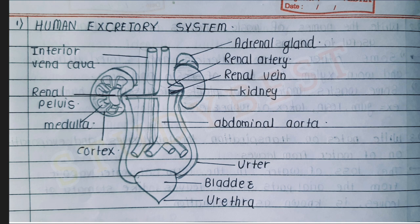The first diagram is of the human excretory system. The labels include: anterior vena cava, pelvis, medulla, cortex, urethra, bladder, ureter, abdominal aorta, kidney, renal vein, renal artery, and adrenal gland. You can see a screenshot of this diagram.